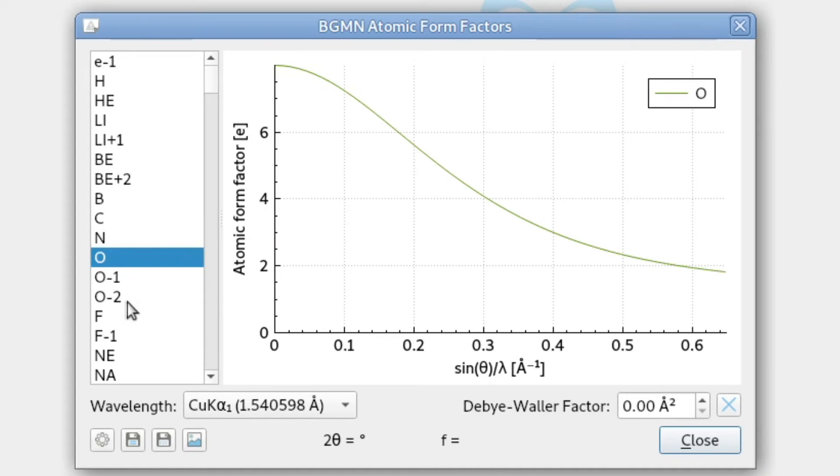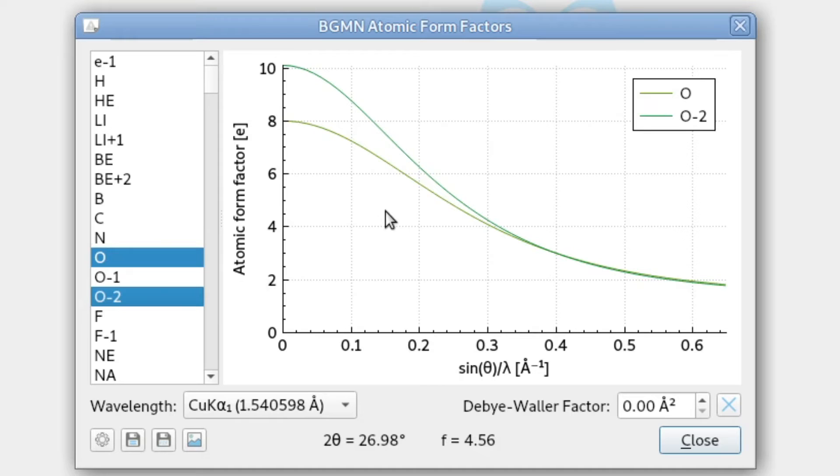Now if we select another one, if we hold control and select the oxygen ion, the O minus 2, we can compare the two scattering factors. And now we can see that above around 60 degrees and higher we cannot distinguish oxygen neutral from the oxygen ion anymore.